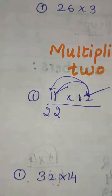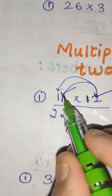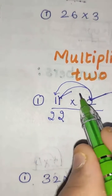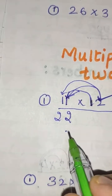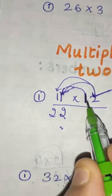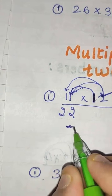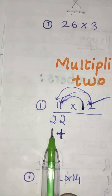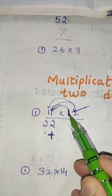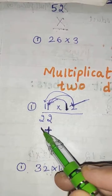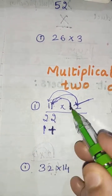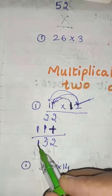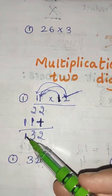First, two ones are two. Now come to the second digit which is in the tens place. You can't write here because this one is in the tens place. So you have to put a plus sign here and start writing the numbers from the tens place. One ones are one — so two plus one is three, and one is one. So the answer is 132.